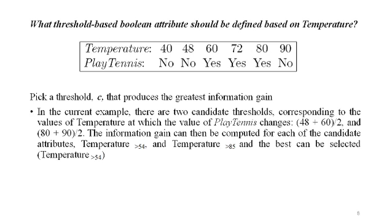This approach addresses the issue of incorporating continuous valued attributes in decision tree learning. The next approach — alternate measures for selecting attributes — will be taken up in the next class. Thank you. Keep understanding these approaches, as they are very important for dealing with issues in decision tree learning.